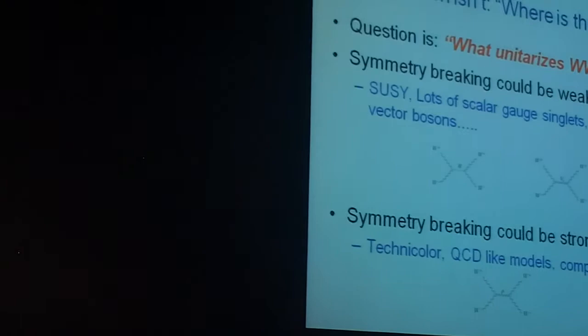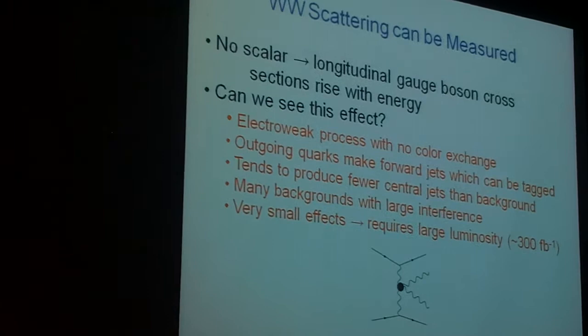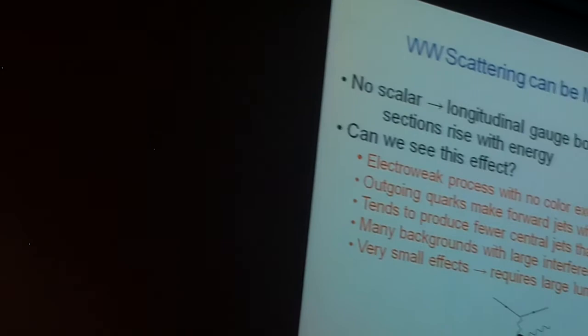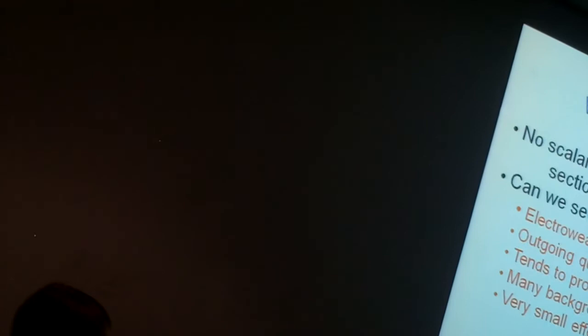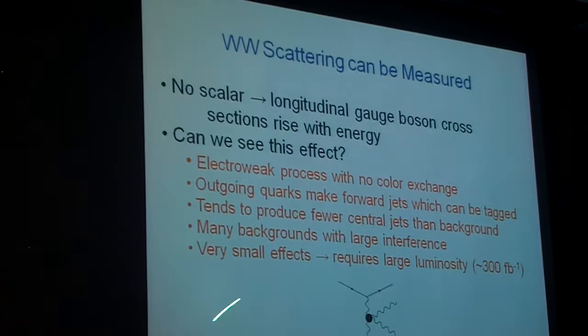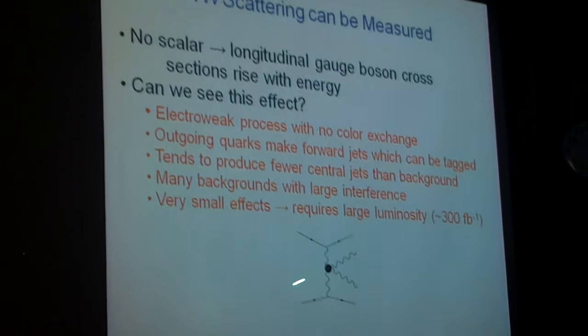So can we measure this? Is this just esoteric WW scattering? We don't have beams of W. And of course the answer is yes, we do have beams of W particles. At the LHC, we have quarks here. Here's two quarks spitting out gauge bosons. This is either a W or a Z interacting to make two gauge bosons coming out. So if we didn't have this scalar, the longitudinal interactions here, gauge boson interactions would rise with energy because I spoiled this cancellation of the energy. Well, can we see this effect? This is an electroweak process here, these are gauge bosons, there's no color exchange. So what happens? These outgoing quarks go forward. We can tag them. So you tend to have fewer central jets than the background.